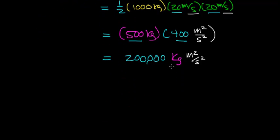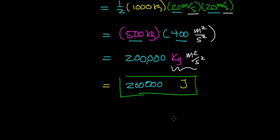Now you'll recall that this unit of a kilogram meters squared per second squared is also referred to as a joule. One joule is the force required to cause an object with a mass of one kilogram to move over a distance of one meter. So our answer is going to be 200,000 joules. So this car has a total energy of 200,000 joules.